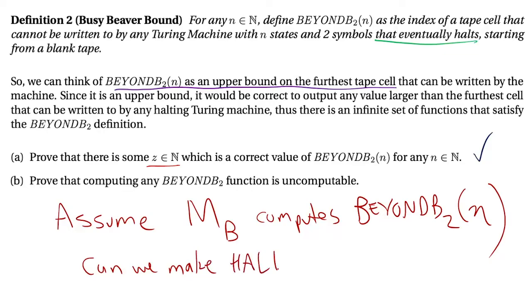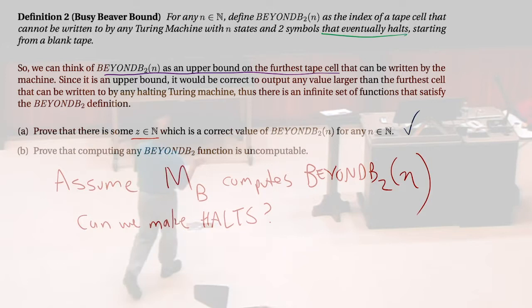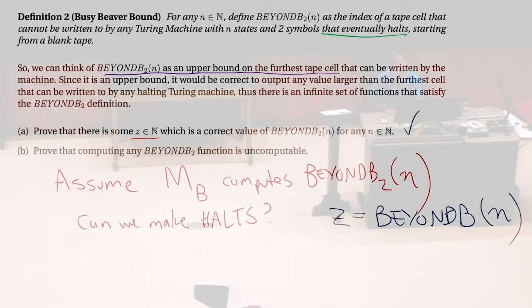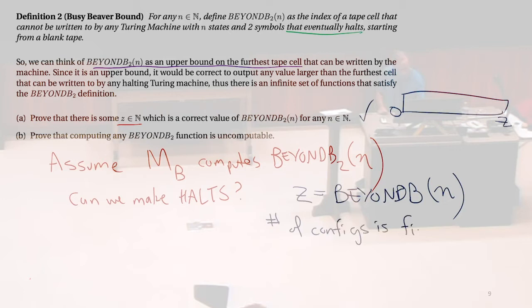Suppose you know the furthest tape cell. Do you know how many different configurations of the Turing machine there are if it never writes beyond cell Z? So we've got Z as the bound — if it computes it, we can get that number. Well, now we don't have an infinite tape, or we don't need an infinite tape. If we know we never write past cell Z, our tape is from 0 to Z. So we know that the number of configurations is finite. There are something like the size of the tape alphabet to the Z, times the number of finite states — so it's some big number, but it's finite.